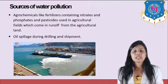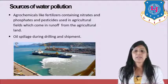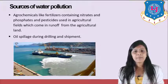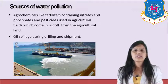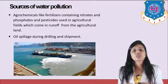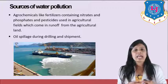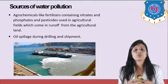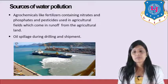Another source of surface water pollution is agrochemicals — fertilizers containing nitrates and phosphates, and pesticides used in agriculture, which come in runoff from agricultural land. Fertilizers are sources of surface water pollution because they contain nitrates and phosphate elements, which are very harmful to water when present in excessive amounts.